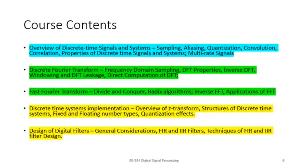Here are the brief course contents we will be covering, colored into three different domains. Part A is about signals. Part B is about frequency — looking at signals and systems from a frequency domain perspective, represented in green. Part C, colored in yellow, covers the systems needed to process signals in time and frequency domains, including filter designs and related topics.